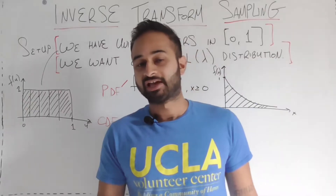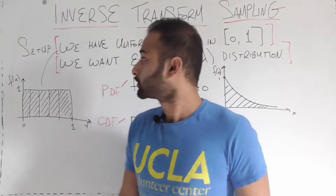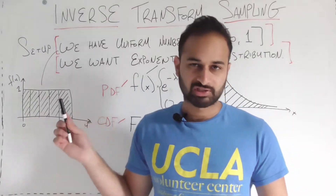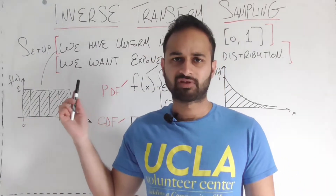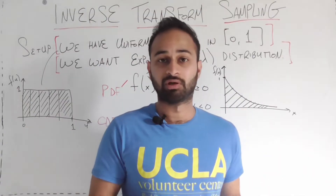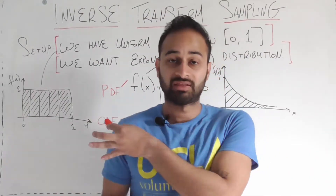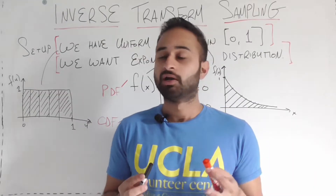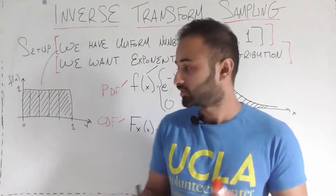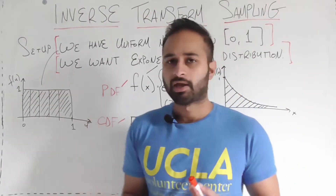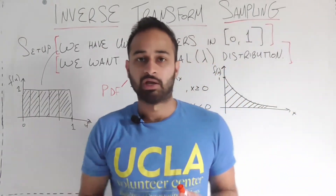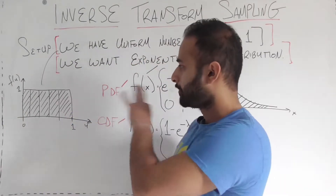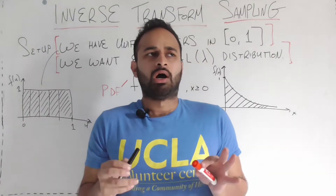In this video we're going to talk about a data science concept called inverse transform sampling. This name sounds a little scary, and it won't be clear why it has this name until the end of the video. In general, this is a method for taking a certain distribution, such as the uniform distribution, and applying some kind of transformation to turn it into a different distribution.